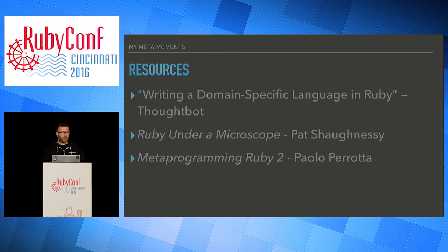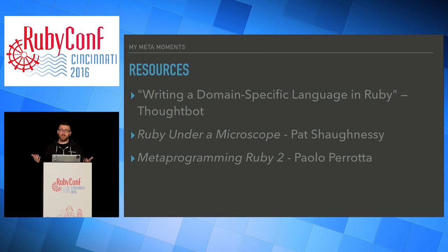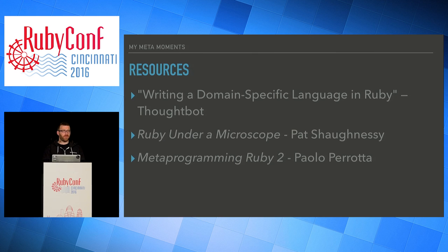Here are some resources I used. There's an article by Thoughtbot called 'Writing a DSL in Ruby' — it's kind of a slimmed-down version of how Factory Girl is implemented, which taught me a lot about how metaprogramming can work. Ruby Under a Microscope is a great book that talks about how Ruby is implemented at the C level, at the VM. The first three chapters were a little rough because they talk about the VM and some C implementation. So if you get to that point and think it's not for you, you can skip the first three chapters, read about the other stuff, and then go back when you have more experience. And Metaprogramming Ruby 2 is just a book about metaprogramming — it goes over a lot of this in more detail and is really useful.